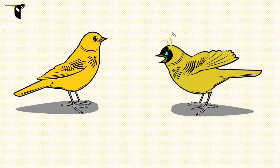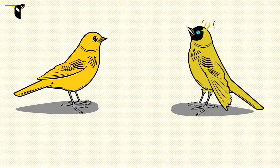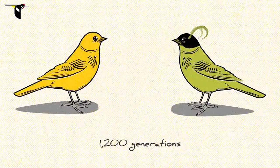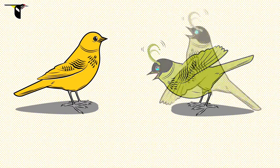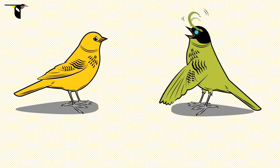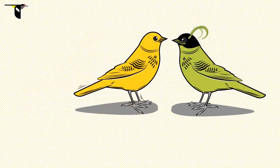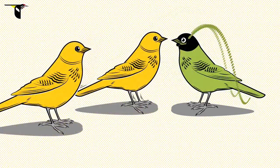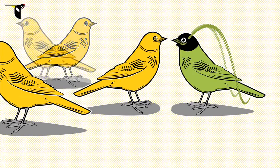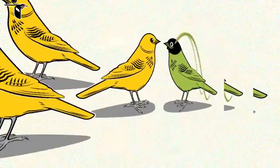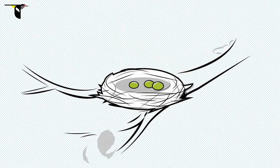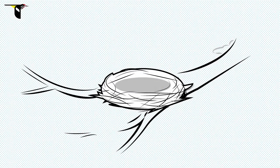Just as before, early in the speciation process when individuals from isolated populations meet, our eastern and western birds readily mate. But as generations pass and the eastern males become fancier, the western females begin to find the eastern males' habits foreign and surprising. But these traits are clearly not deal-breakers — even after 10,000 generations of geographic isolation, some of the western females continue to find the males' displays attractive. At this stage, the eggs she lays aren't viable because the separated populations have evolved too many genetic differences to be compatible.